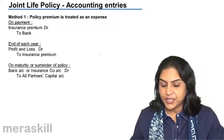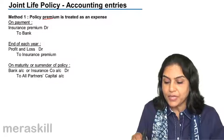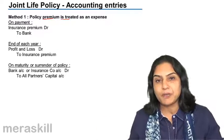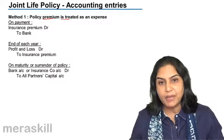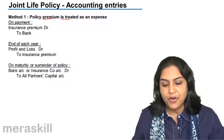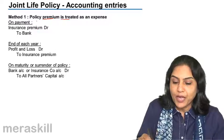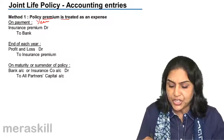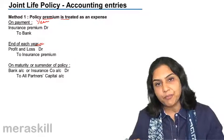In case of a joint life policy, the first method is to treat the policy premium as an expense. Insurance premium is simply treated as an expense of the partnership firm. So each time we make a payment, we say insurance premium account debit — joint life policy premium account debit to bank with the amount of premium paid. This will be every year, and at the end of each year we will close this account by transfer to the profit and loss account.